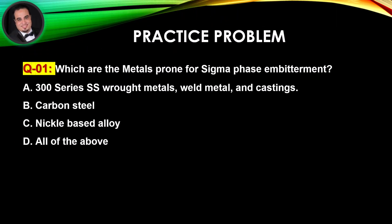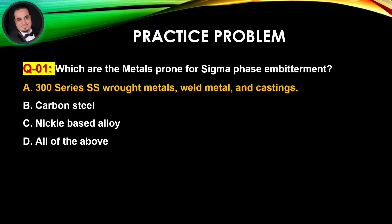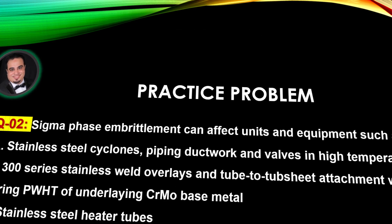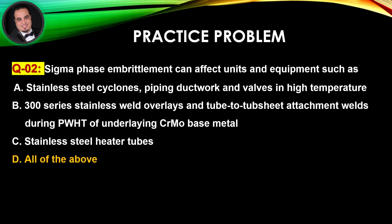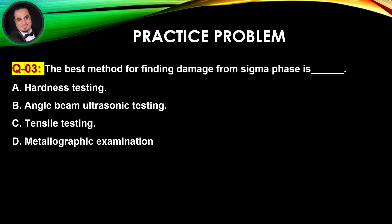Practice questions. Question 1: Which metals are prone to sigma phase embrittlement? Answer is A. Question 2: Sigma phase embrittlement can affect units and equipment such as? Answer is D. Question 3: The best method for finding damage from sigma phase is? Answer is D.